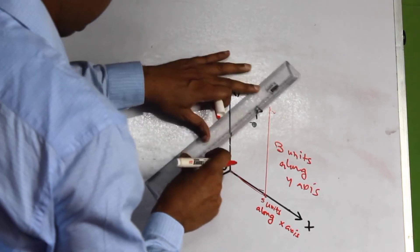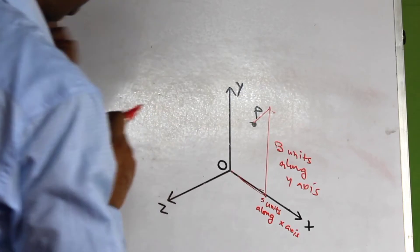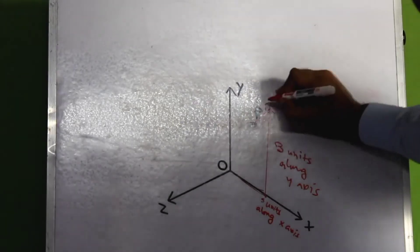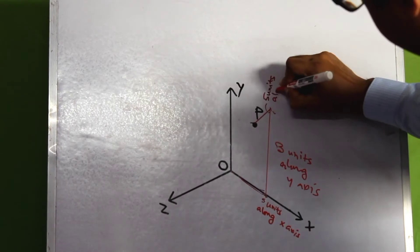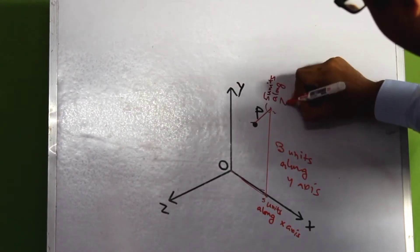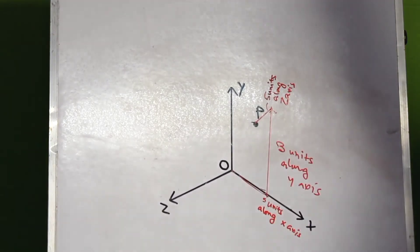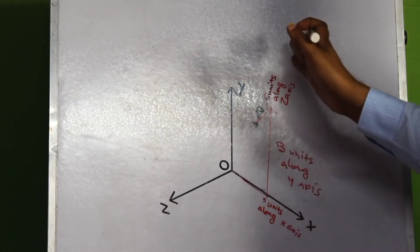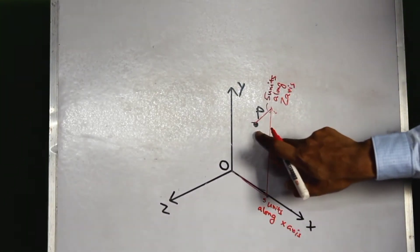And five units along the z-axis, moving parallel to the z-axis. So if we move five units along the x-axis, three units along the y-axis, and five units along the z-axis, we reach point P.